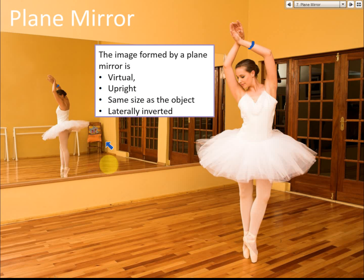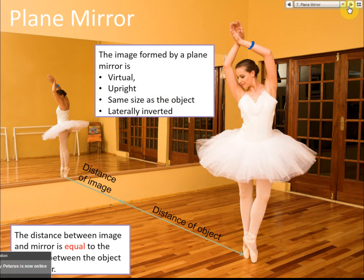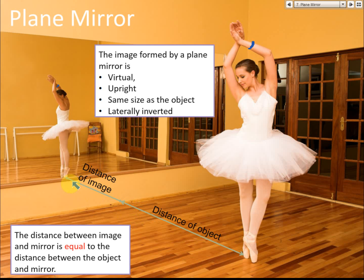To summarize, the image in a plane mirror is the same size, upright, laterally inverted, and virtual — virtual means it is not formed on a screen. Also, the distance of the object from the mirror equals the distance of the image from the mirror. If the lady is 3 meters from the mirror, the image is also 3 meters from the mirror.